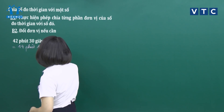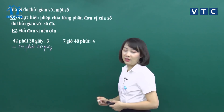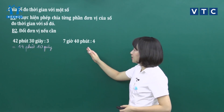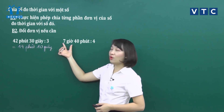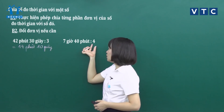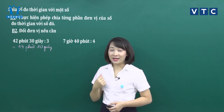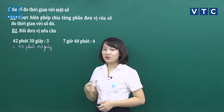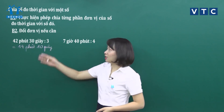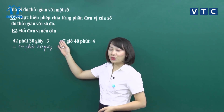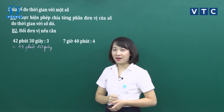Ở phép tính thứ 2, cô có 7 giờ 40 phút chia cho 4. Quan sát thấy rằng nếu lấy số 7 chia cho 4 thì không chia hết cho 4, trong khi 40 chia 4 thì chia được. Đây chính là ví dụ giúp chúng ta hiểu rằng khi nào chúng ta cần đổi đơn vị đo thời gian.